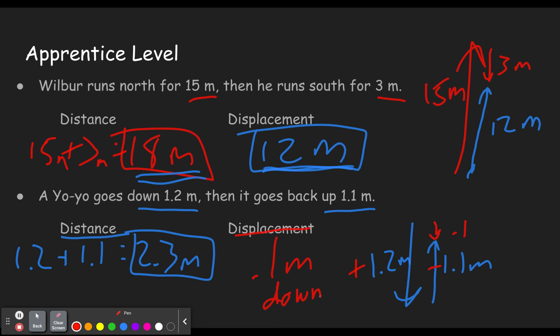Should have written up here, 12 meters north. Because remember, direction is important for vectors. Now in the long run, writing which direction it is isn't the essential part. The essential part is that it has direction as an integral part of it. And in order to remember that, be sure you write down the direction for now.